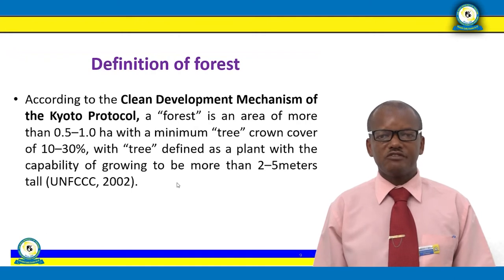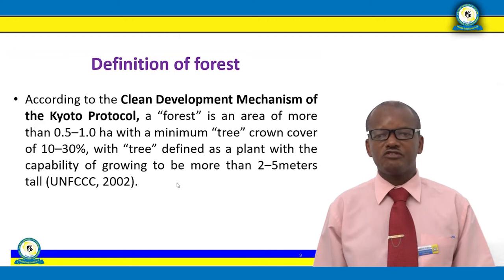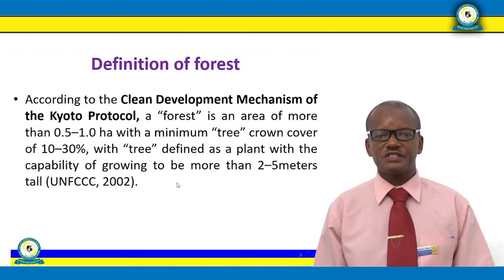According to the Clean Development Mechanism of the Kyoto Protocol, a forest is an area of more than 0.5 to 1.0 hectares, with a minimum tree cover of about 10 to 30%, defined as plants with the capacity to grow more than 2 to 5 meters tall. This is according to UNFCCC 2022.